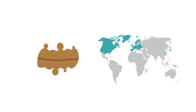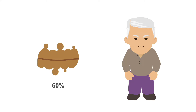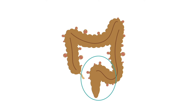In terms of diverticulosis, Western and industrialized nations have prevalence rates ranging from 5 to 45%. The prevalence of diverticulosis is age-dependent, increasing from less than 20% at age 40 to 60% by age 60. Diverticulitis is present in up to 15% of diverticulosis patients. Men and women are generally equally affected. The sigmoid colon is the most common location for diverticulitis.